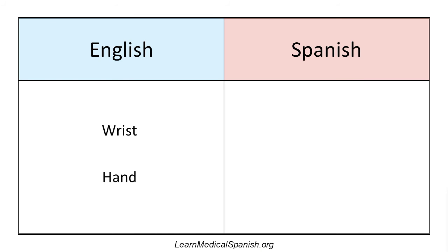Here's the first word: wrist — and it's always going to be 'the wrist' or 'the whatever,' so always include the word 'the.' So the wrist. For bonus points, what else does muñeca mean? This is random, but muñeca is the word for doll as well — the word for wrist and the word for doll are the same. Kind of weird, huh? But anyway, la muñeca means the wrist.